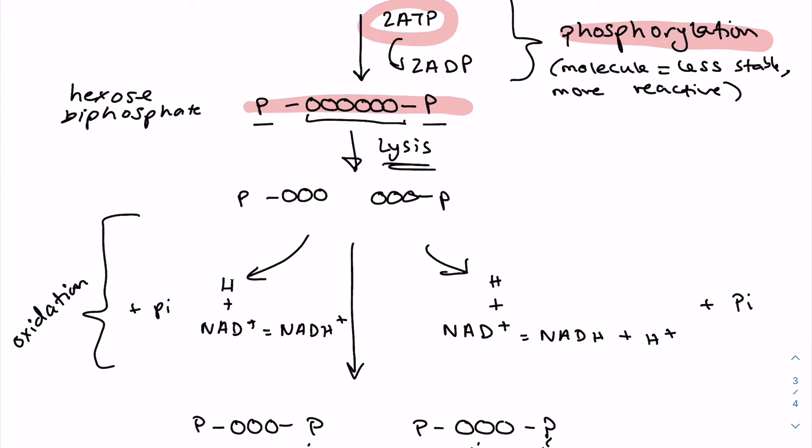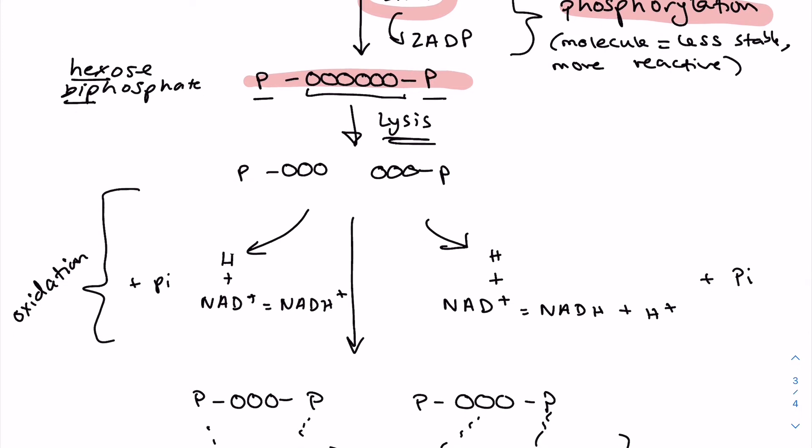The second step is lysis, and lysis is basically when this hexose biphosphate is split into two triose phosphates. And again, we've got our three carbons and our one P.